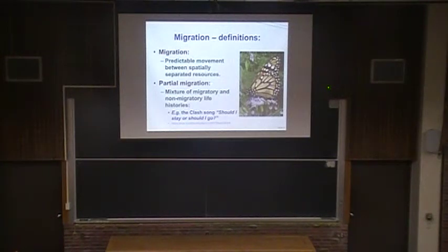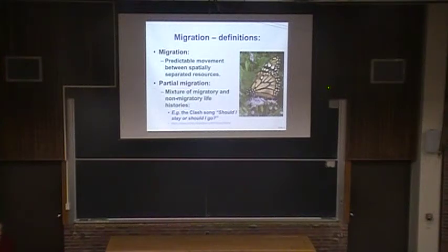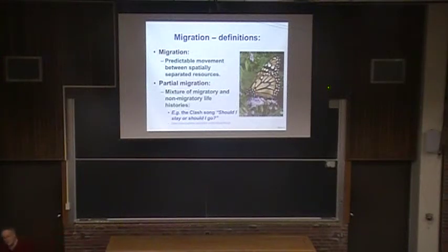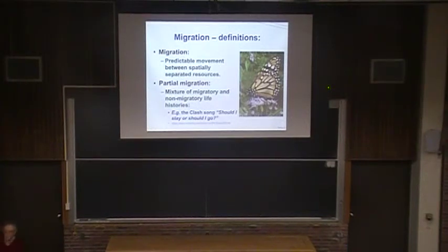Monarchs are partial migrants, with a mixture of migratory and non-migratory life histories. I like using the British punk rock band The Clash and their song 'Should I Stay or Should I Go?' — should I stay or should I not? You just don't know. All the decisions that people are making, whether about sex or food or whatever, are all related to the choice of actually moving or not.